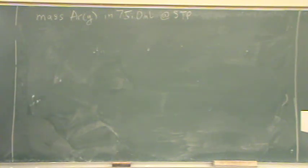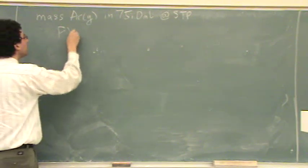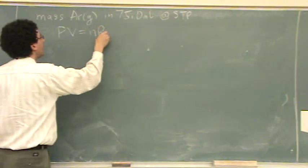It's not a partial pressure problem because there's only one gas. There's no velocity, no root mean square, no kinetic energy, no Graham's law possible. The only thing possible is ideal gas law. So we'll go PV equals nRT.